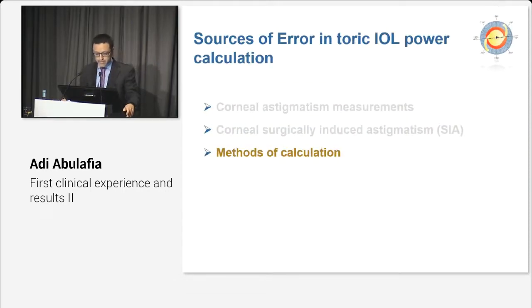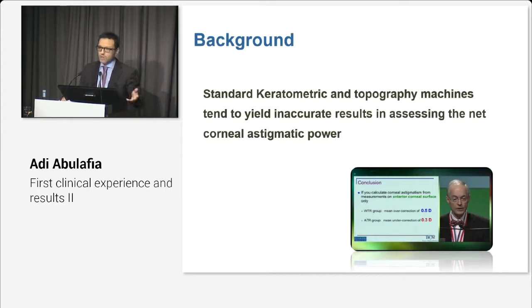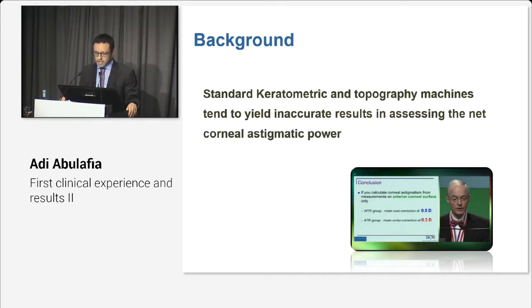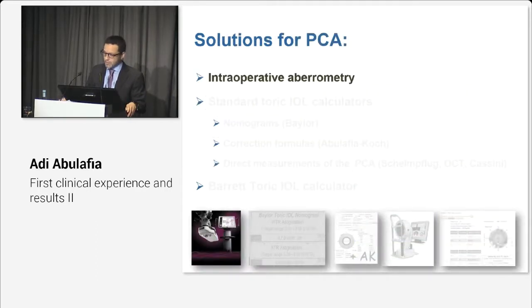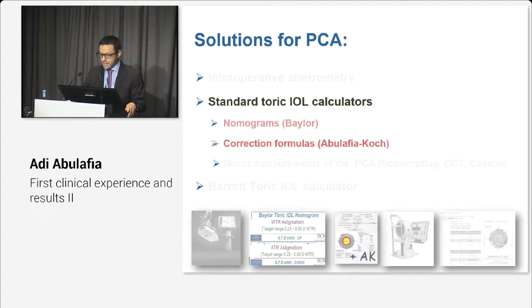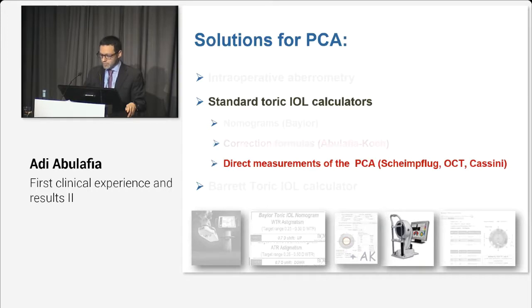The last topic is the methods of calculations. Today we know that standard keratometry and topography machines tend to yield inaccurate results in assessing the net corneal astigmatic power. It's been more than four years since Koch reminded us of the role of the posterior cornea in toric IOL calculations. Options for incorporating this include: intraoperative aberrometry; toric IOL calculations with correction formulas such as the Baylor nomogram or the Abulafia-Koch correction formula; or direct measurements of the posterior cornea.